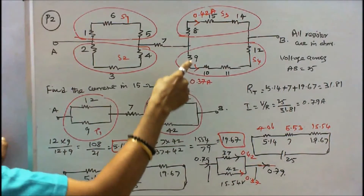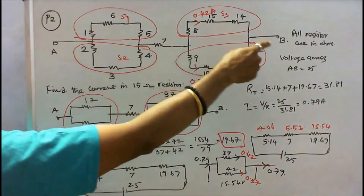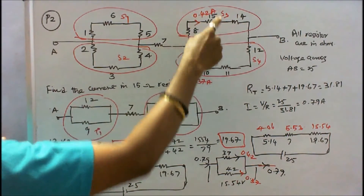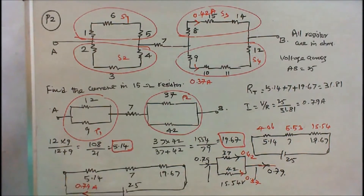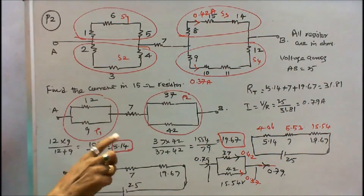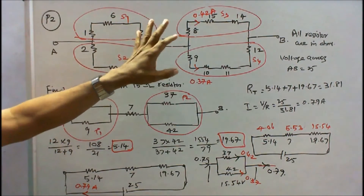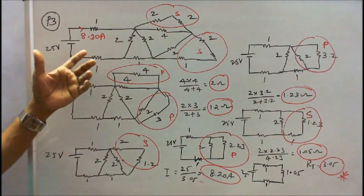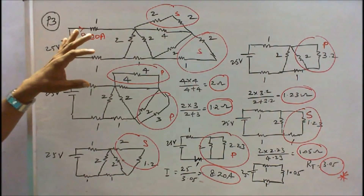Verification: current into the junction is 0.79A; current leaving is 0.42 + 0.37 = 0.79A — current verified. Total resistance is 31.81Ω, and the current flow in the 15Ω resistance is 0.42 amps.